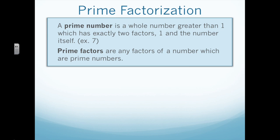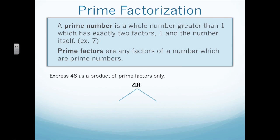So, let's review prime factorization. We want to express 48 as a product of prime factors only, meaning we want to break this number down so that we are left with only prime factors. We start with the number 48 and break it apart into two factors. There are a number of ways you can do this — you can choose to divide 48 by 2, 3, or 4. I'm going to choose to divide 48 by 4. 48 divided by 4 equals 12, so 4 and 12 are the numbers I write in.